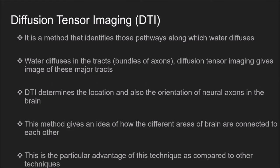Diffusion tensor imaging or DTI is a method that identifies pathways along which water diffuses in the tracts, and gives an image of these major tracts. DTI determines the location and orientation of neural axons in the brain. This method gives an idea of how different areas of the brain are connected to each other, which is its particular advantage compared to other techniques.